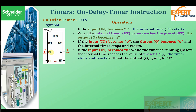If the input parameter becomes zero, the output becomes zero and the internal timer stops. Whenever this parameter goes low at any given time, Q becomes zero and the internal timer resets to zero seconds. If the input parameter becomes zero while the timer is running — that is, before the internal timer reaches the preset value — the timer stops and resets without the output going to one.